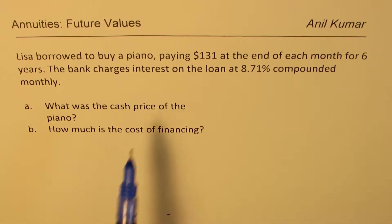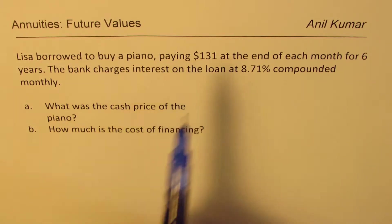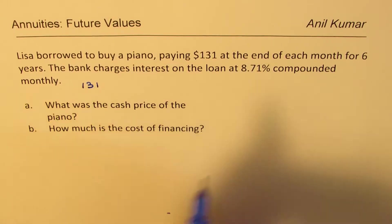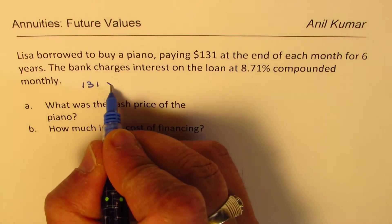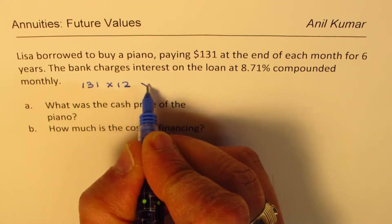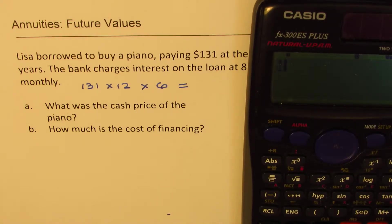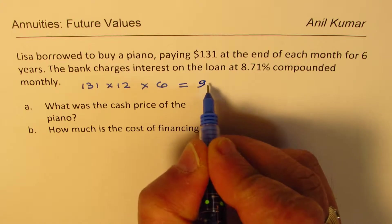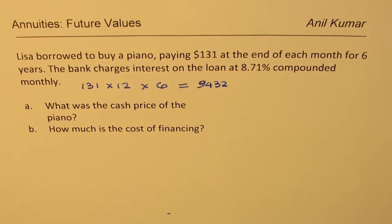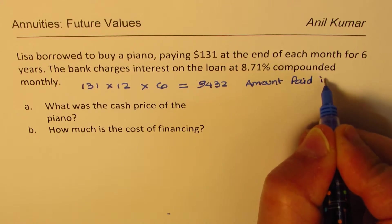Now let's first find how much she actually paid. Lisa borrowed to buy a piano, paying $131, so she paid $131 at the end of each month. That means there are 12 months in a year for 6 years. So times 12, this is the number of months, times 6 years. So that is the amount she actually paid. So let's figure this out, $131 times 12 times 6, $9432. So let's say $9432. So all these amounts are in dollars. So this is the amount paid in dollars.